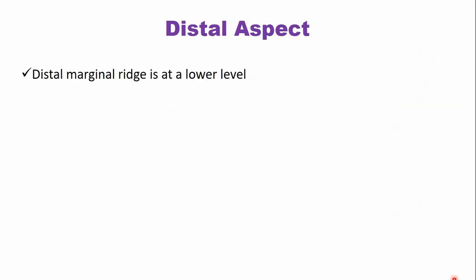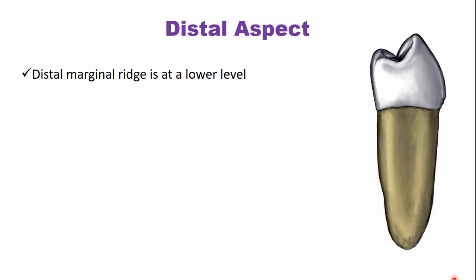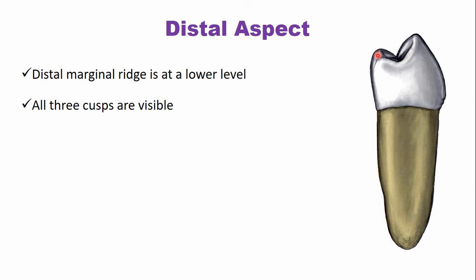From the distal aspect, the distal marginal wedge is present at a lower level compared to the mesial marginal wedge. Because it is positioned slightly cervically, all three cusps are visible: the buccal cusp, the mesial lingual cusp, and the distal cusp. Additionally, because the marginal wedge is present slightly below, part of the occlusal surface is also visible from the distal aspect.